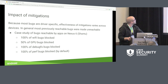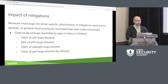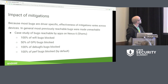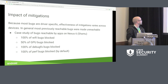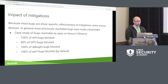Looking at the impact of the mitigations, because most of the bugs are driver-specific or device-specific, we have to look at per device. The device I chose was Shamu. For Shamu, 100% of the Wi-Fi bugs were blocked, 50% of the GPU bugs were blocked, and 100% for debugfs and perf. This shows the effectiveness of attack surface reduction — these were all the largest areas of bugs that we had, and we were able to remove access to those without impacting what users see.